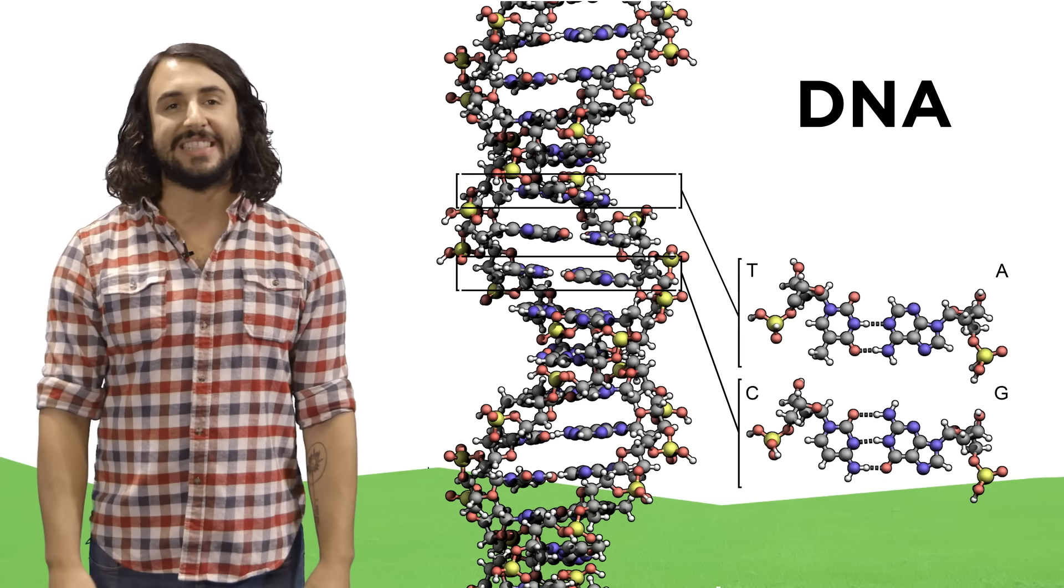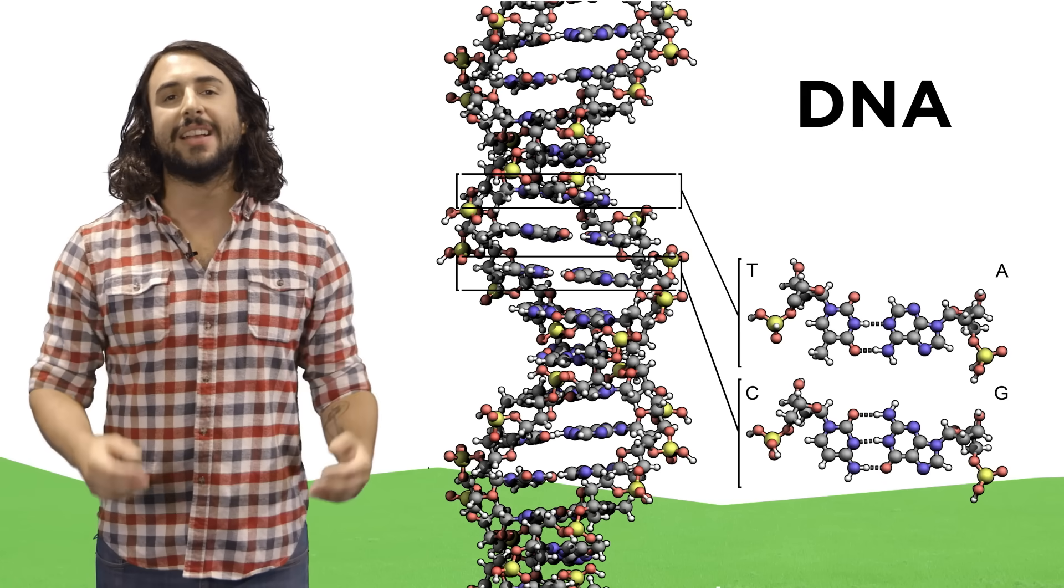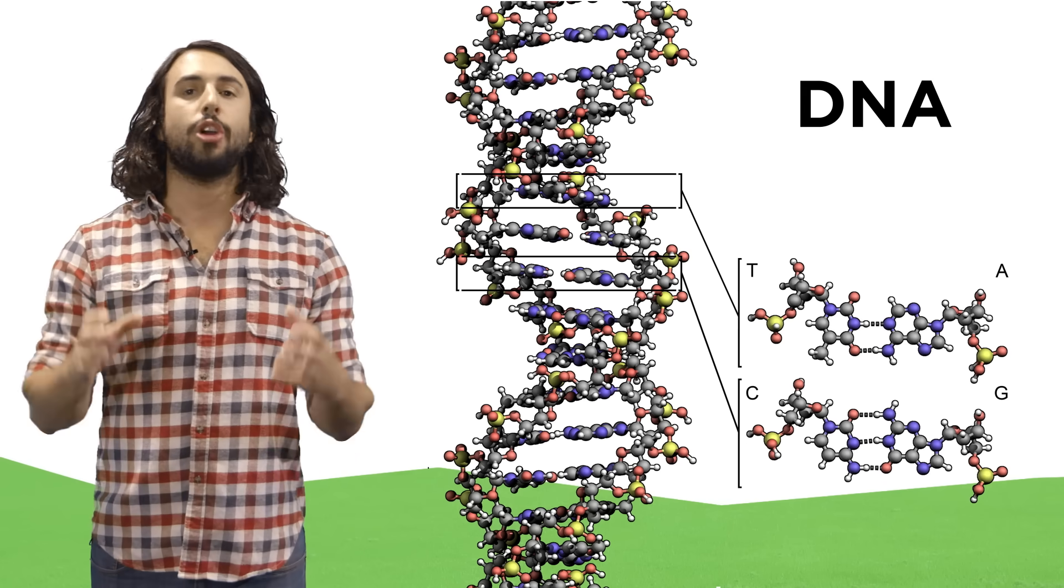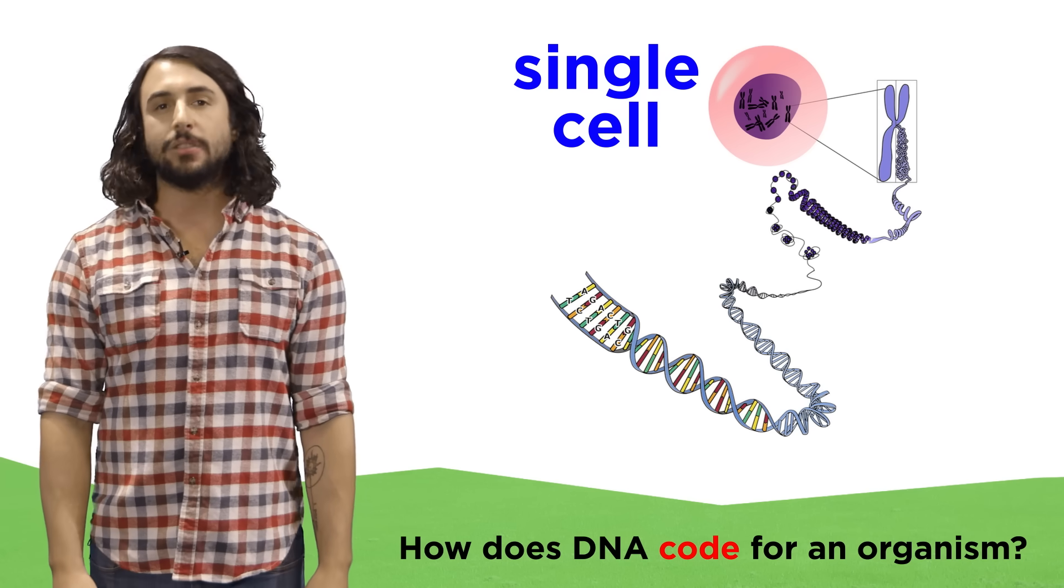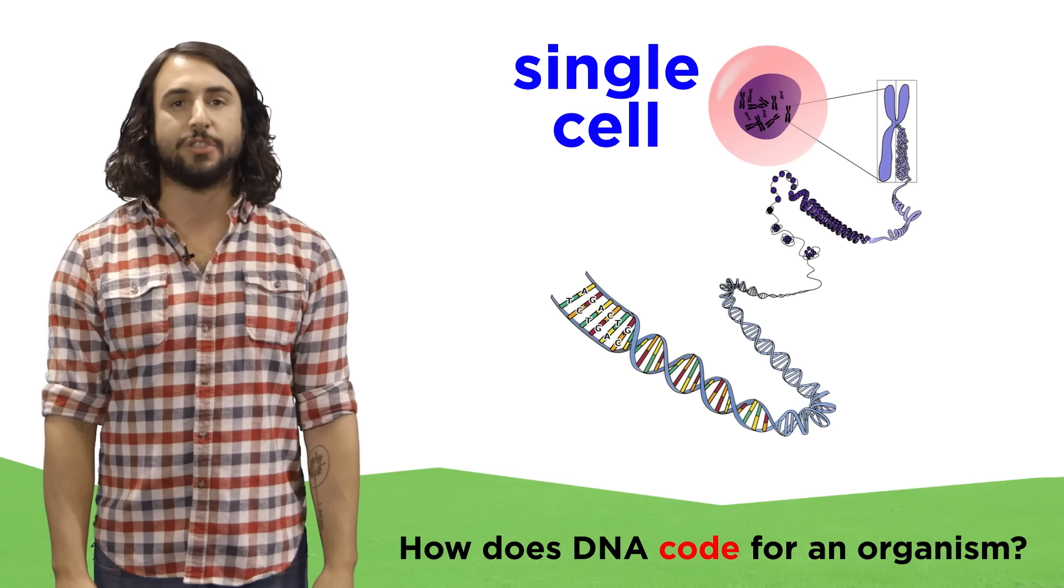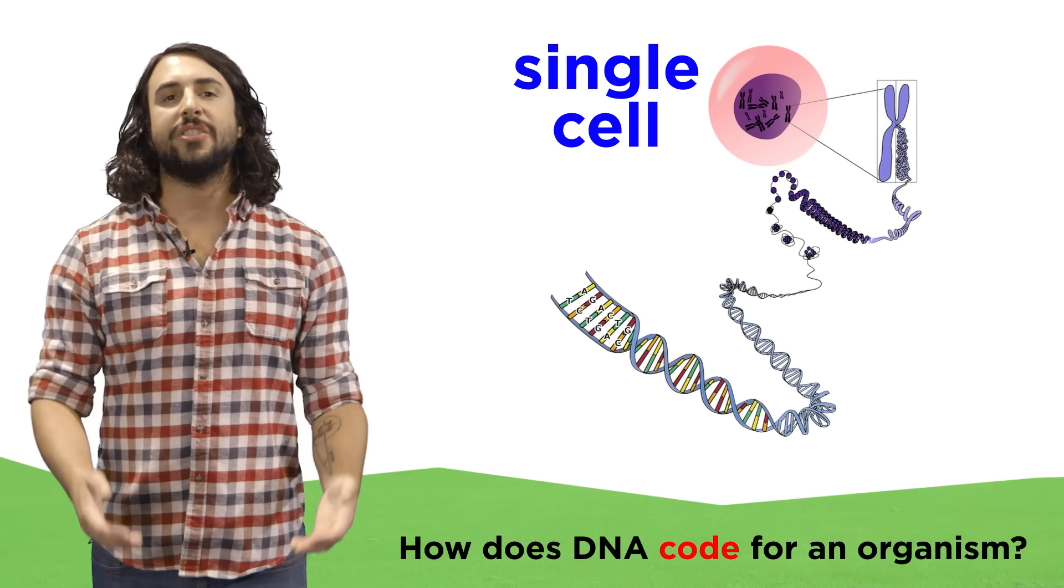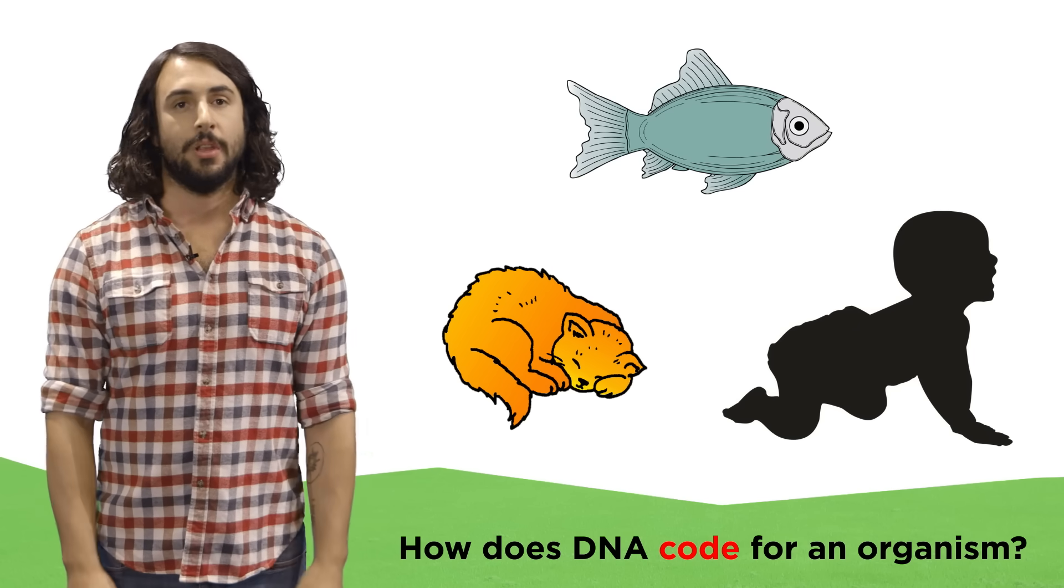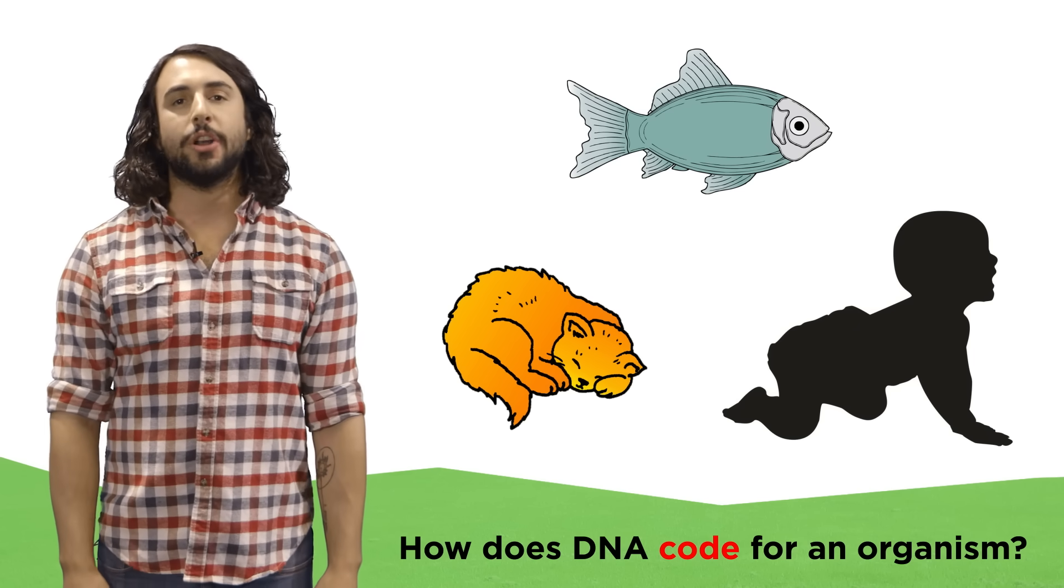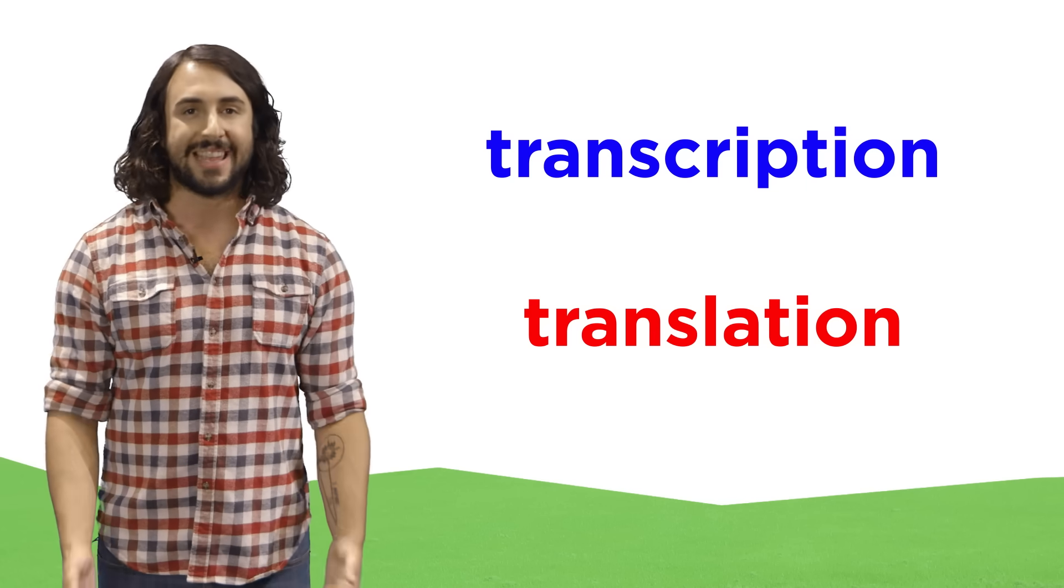Now that we understand the structure of DNA, it's time to understand exactly how this molecule codes for a particular organism. How is it that a single cell containing a specific set of genetic material will result in the development of a fish or a cat or a human? To understand this phenomenon, we have to learn about transcription and translation.